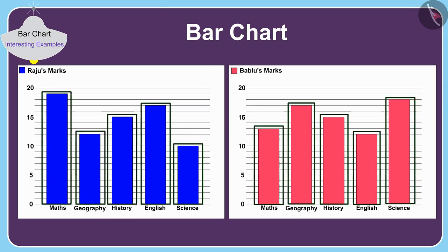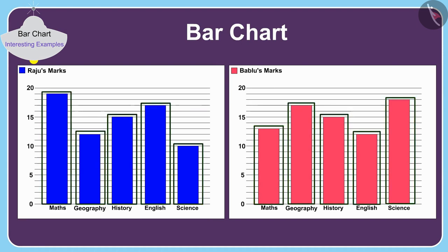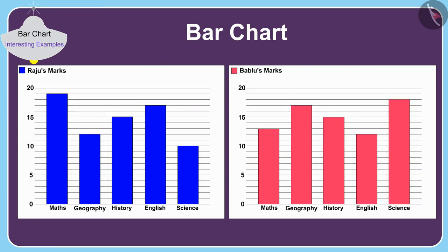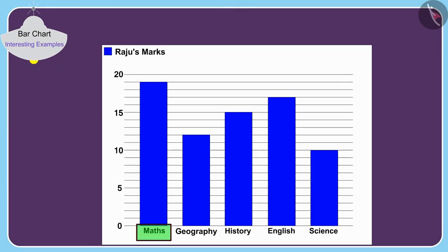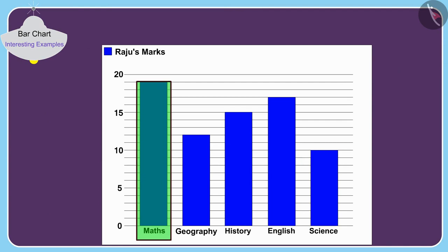Children, by looking at the bar charts of Raju and Babloo, can you tell which subjects have Raju and Babloo got the highest marks in? If you wish to, you may find the solution by stopping the video. The highest rectangle in Raju's bar chart is in mathematics.